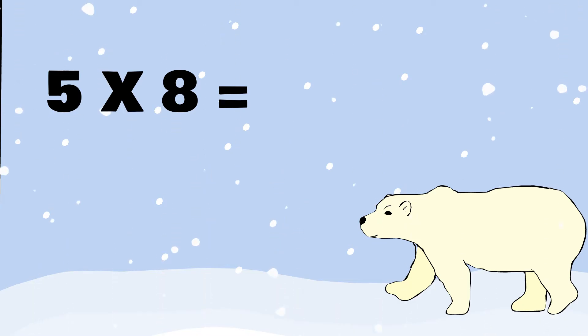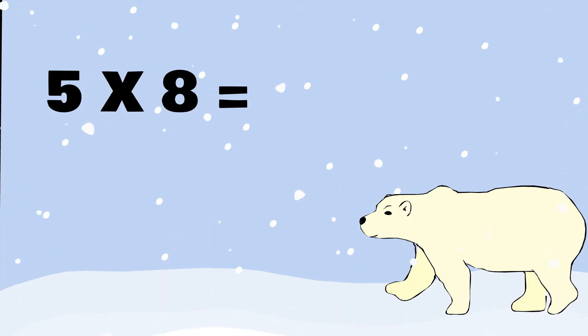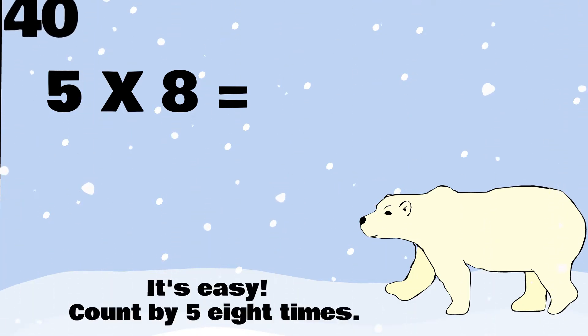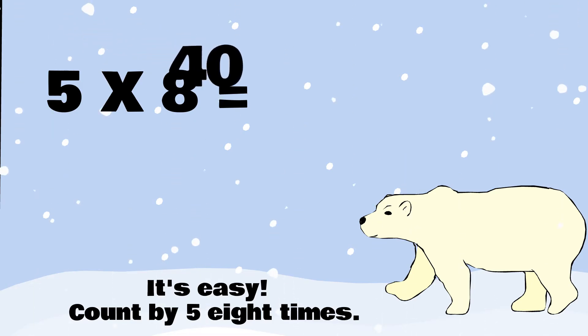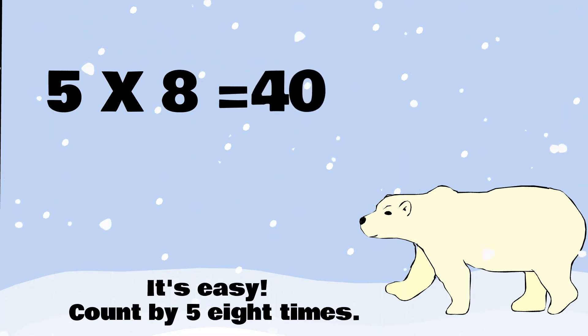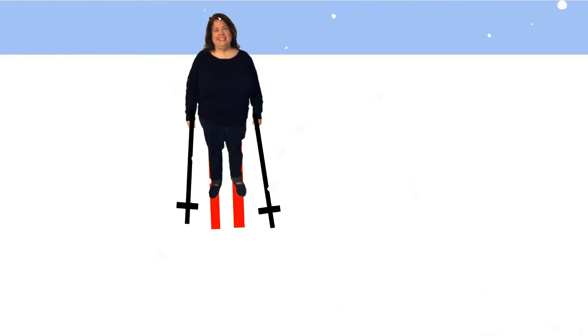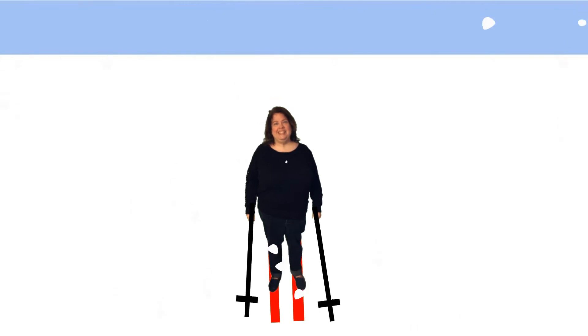What's the product of 5 times 8? 5 times 8 equals 40. Just count by 5 eight times: 5, 10, 15, 20, 25, 30, 35, 40.